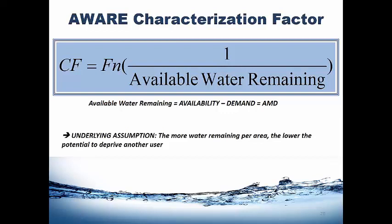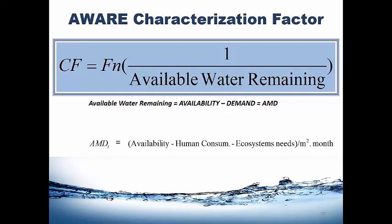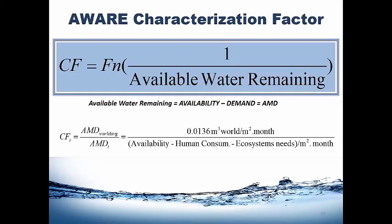AWARE — Available Water Remaining — is based on availability minus demand, or AMD. The underlying assumption is that the more water remaining per unit area, the lower the potential to deprive another user. The more water remaining after demand has been met from both human and ecosystem perspectives, the less potential to deprive other users when consuming water in this area. More specifically, AMD is calculated as: renewable availability minus human consumption minus ecosystem needs, per meter squared per month. We chose the monthly scale as much more relevant than the annual scale and still manageable. The per-area normalization enables comparison of large versus small watersheds.